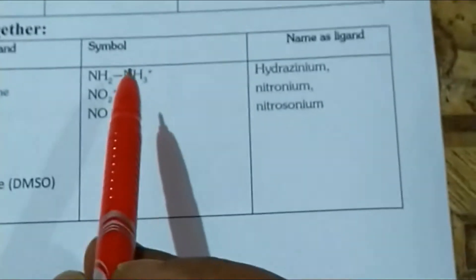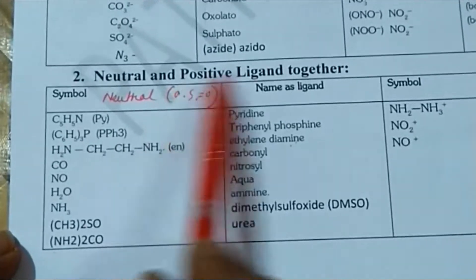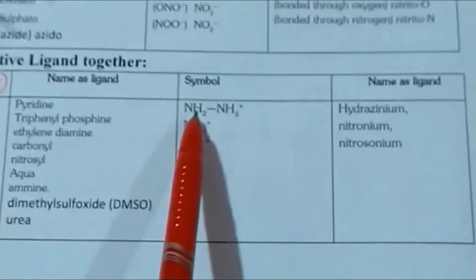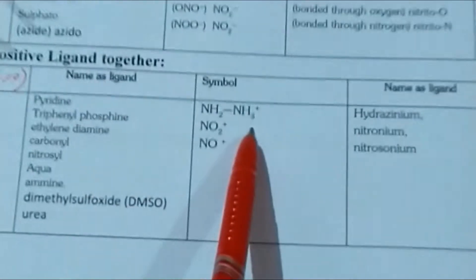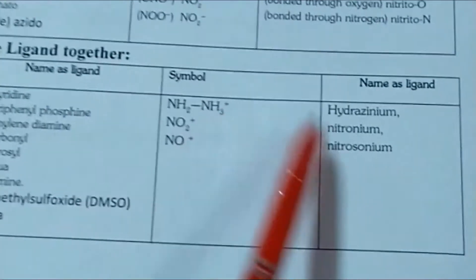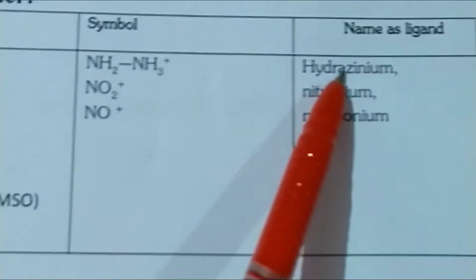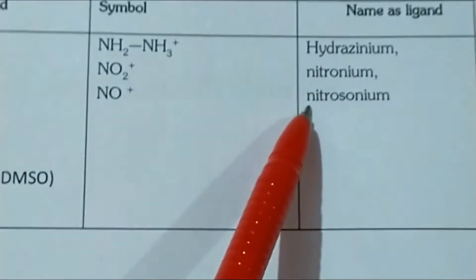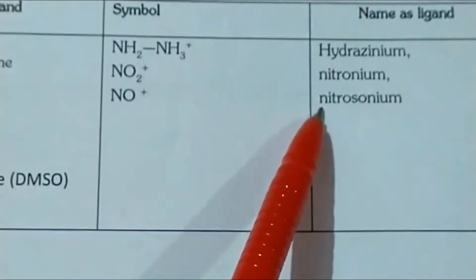There are also positive ligands. NH₂NH₃⁺ is hydrazonium. NO₂⁺ is nitronium. NO⁺ is nitrosonium.